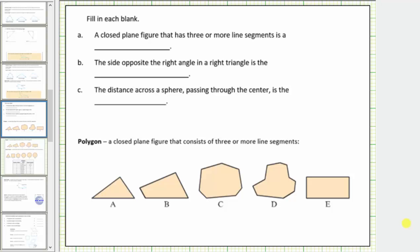In this lesson, we will be discussing a variety of questions, most of which are based upon polygons. In this first set of questions, we're asked to fill in the blank. For A, a closed plane figure that has three or more line segments is a blank. Looking at our notes below, a polygon is a closed plane figure that consists of three or more line segments.